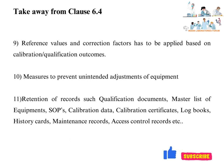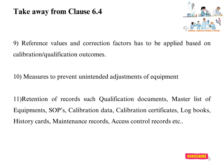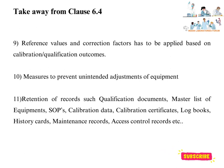Reference values and correction factors must be applied based on calibration or qualification outcomes. The lab should take measures to prevent unintended adjustments, such as access restrictions, user access privileges, user IDs, and passwords. The lab should retain records such as qualification documents, master list of equipment, SOPs, calibration data, calibration certificates, log books, history cards, maintenance records, and access control records.